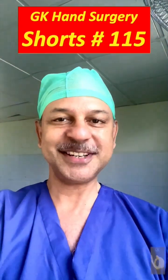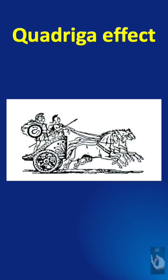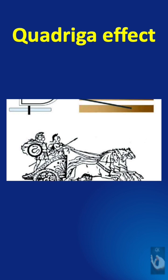Learning hand surgery one point at a time. The term quadriga essentially refers to a chariot drawn by four horses. This represents the four tendons to the four fingers of the common belly of the flexor digitorum profundus muscle.